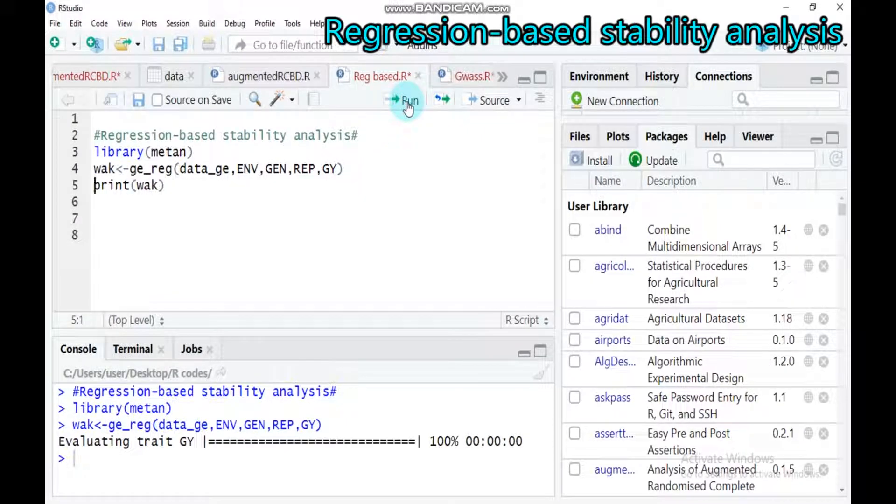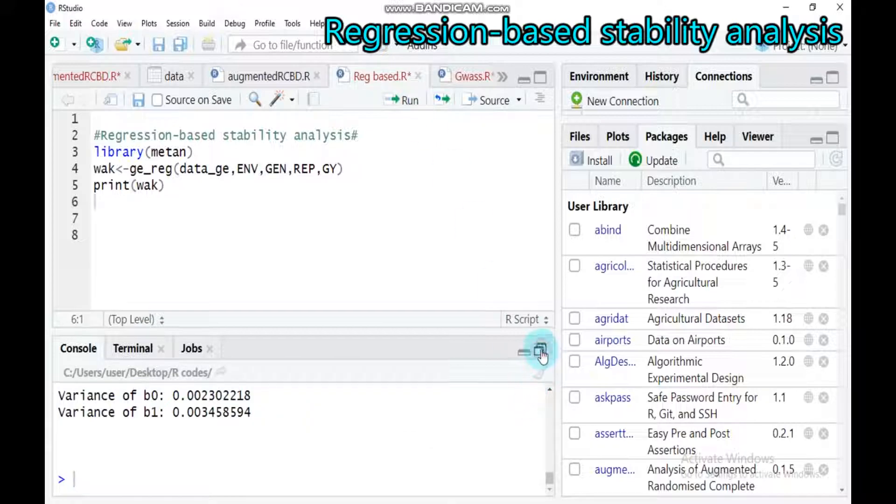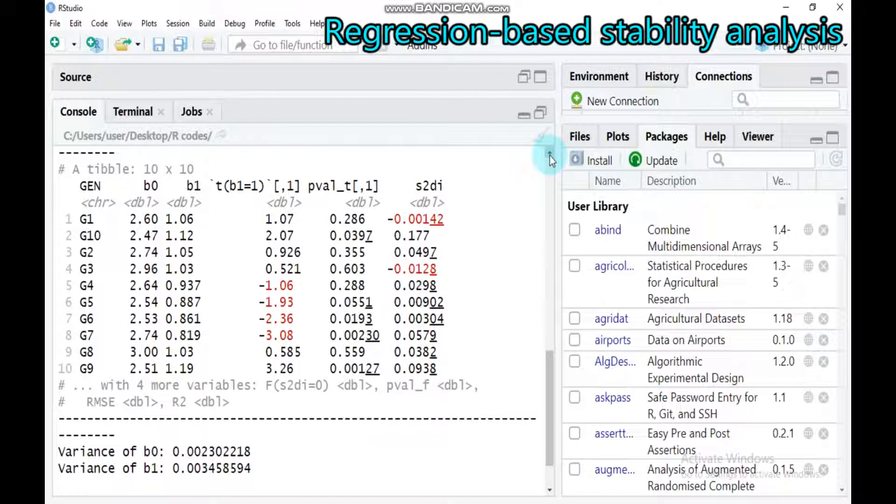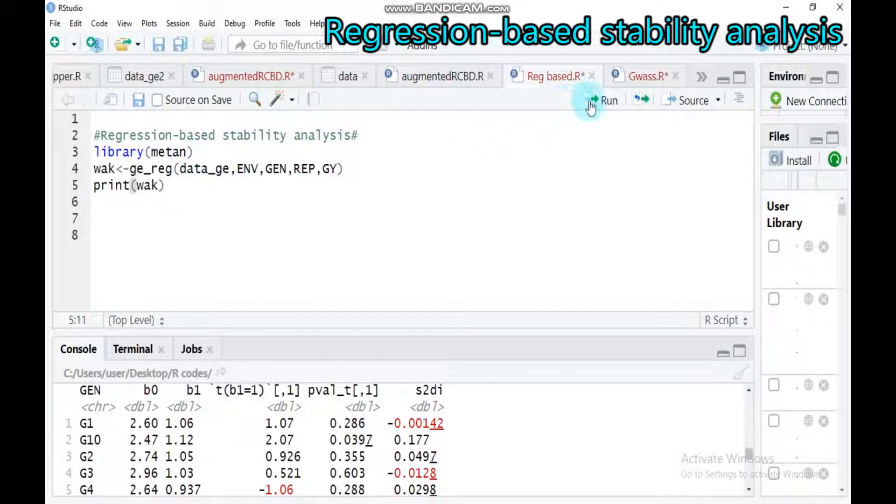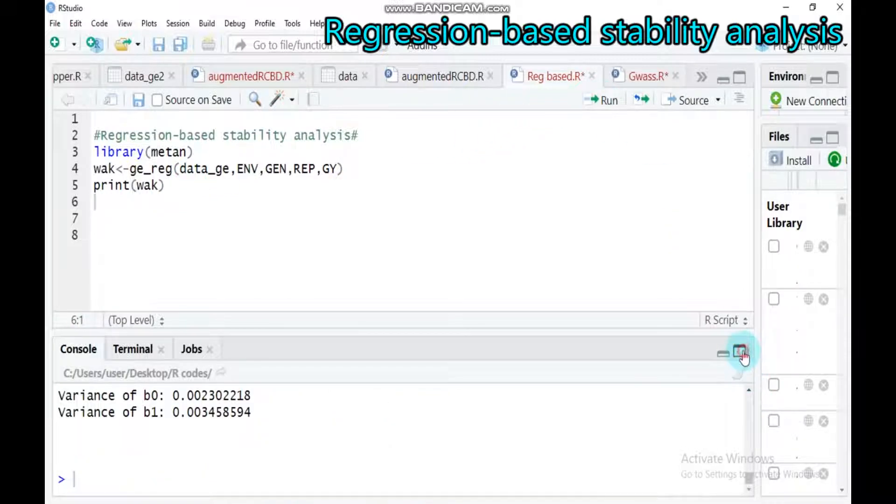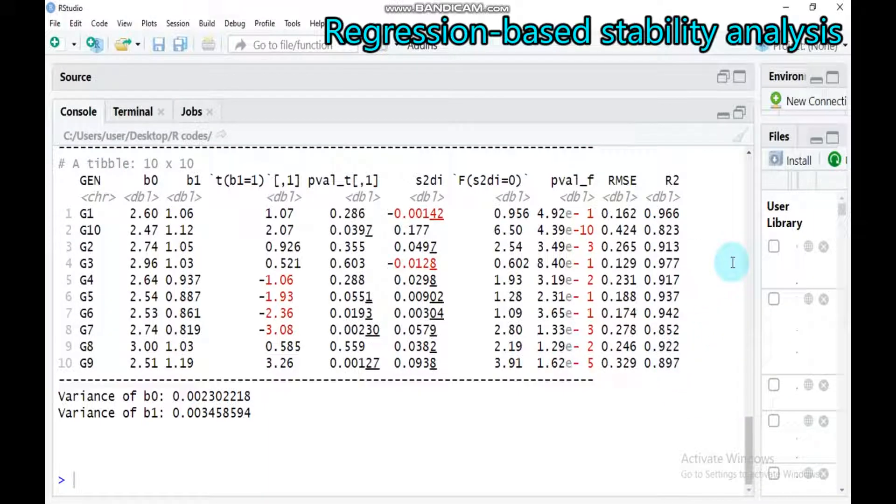On the basis of Evert and Russell, you have to select based on three things. Let's first print wac and then discuss briefly about how to select the stable genotype. Some variables are not visible, so in order to see that, you have to increase this. And again, let's run again, print wac. Now all parameters are displayed here.